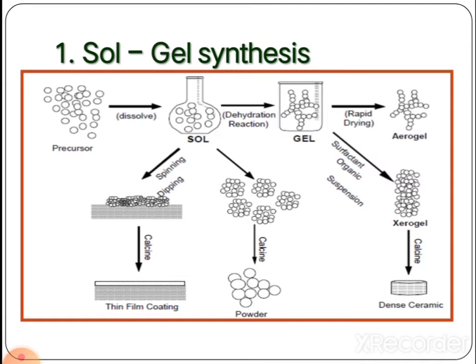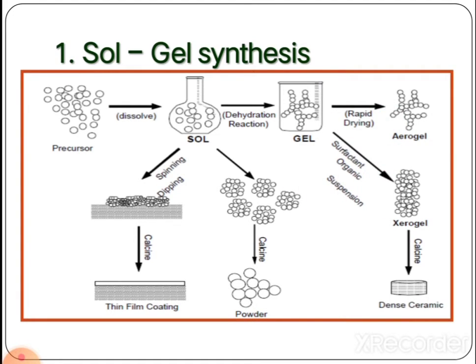Starting from the gel: when the sol is dehydrated by heating, a denser form of product called gel is formed. On rapid drying, an aerogel is obtained, which has a highly porous substrate structure. Further, when the same gel is treated with an organic surfactant, a xerogel is formed where pores are closely packed. On further calcination, the gaps or holes are sealed, leading to a denser ceramic material.